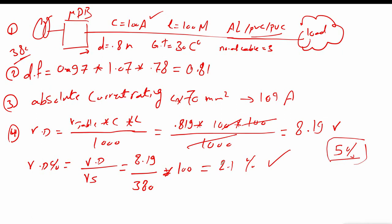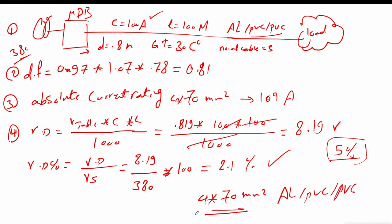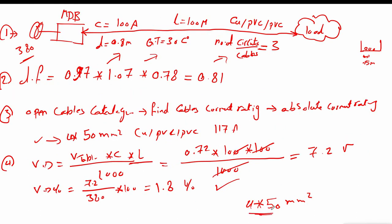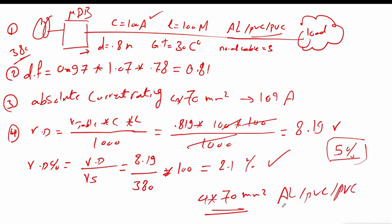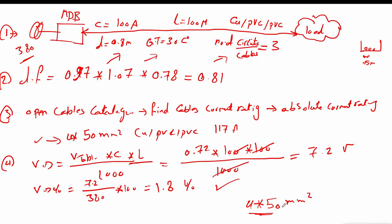We will use a 4-core, 70 square millimeter aluminum PVC/PVC cable. As a comparison, for the copper cable we used 4 × 40 square millimeters. Aluminum requires a larger cross section because copper has lower resistance and can carry more current for the same cross-sectional area.